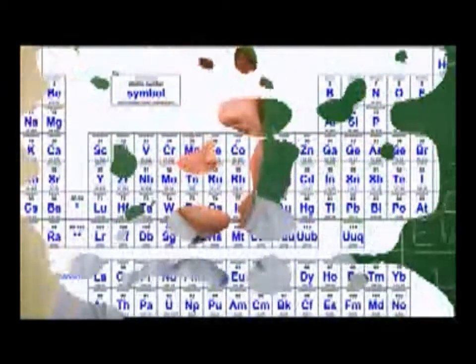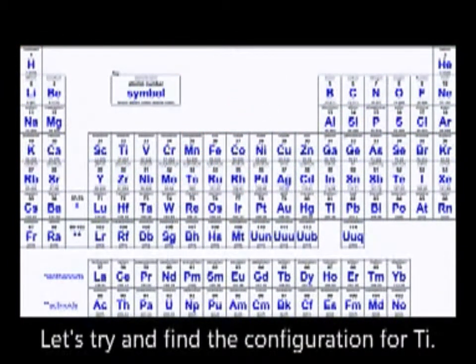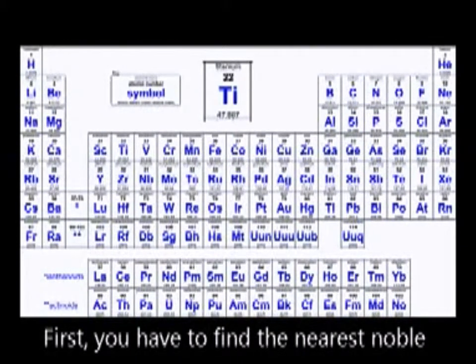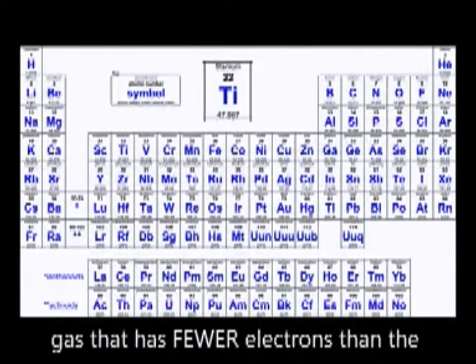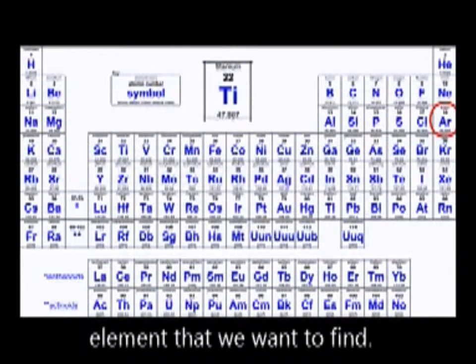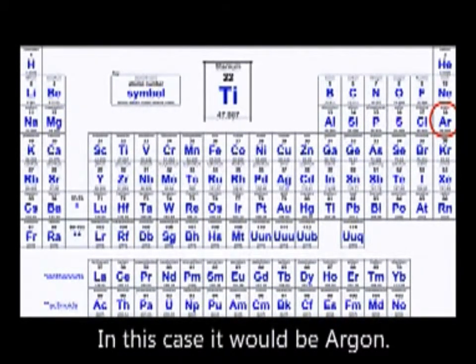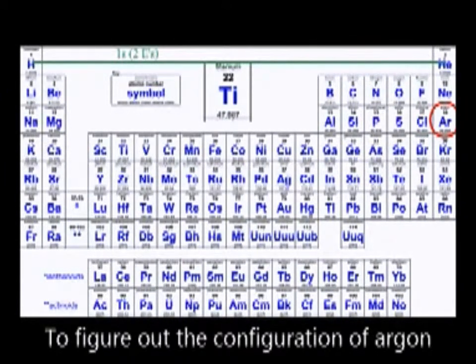Let's look at our periodic table chart. Let's try finding the configuration for titanium. First, we have to find the nearest noble gas that has fewer electrons than the element that we want to find. In this case, it would be argon.